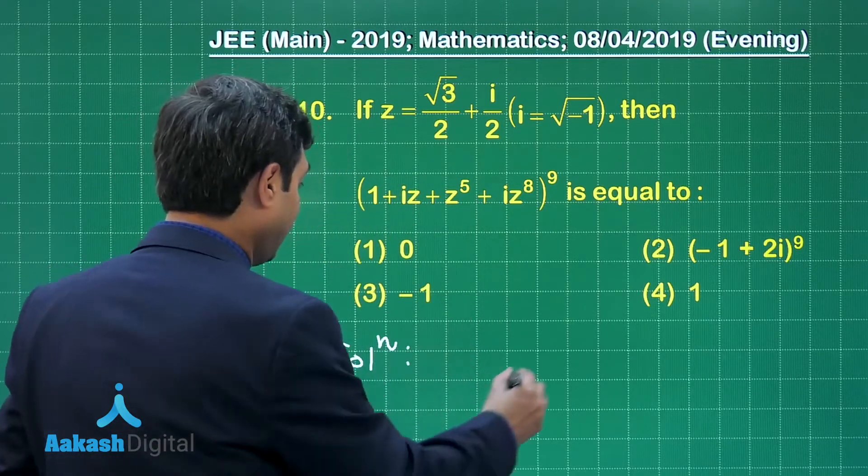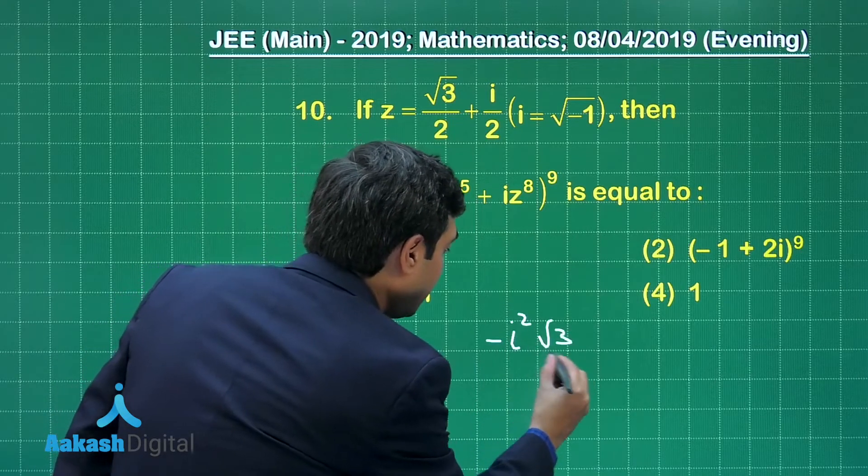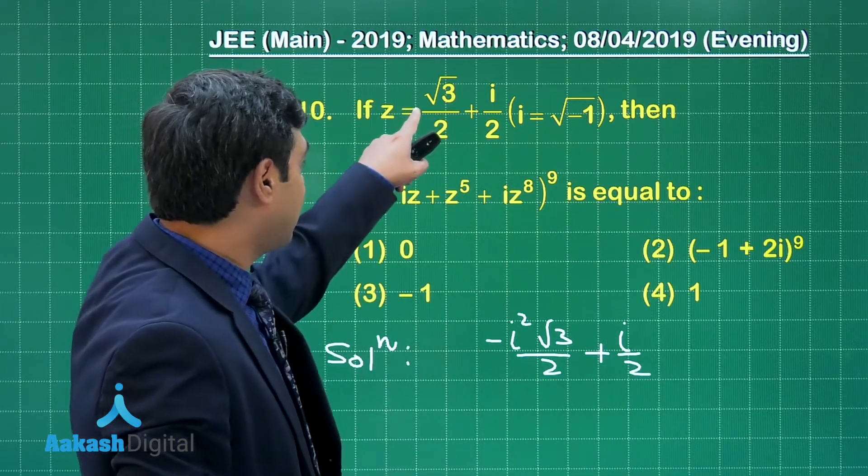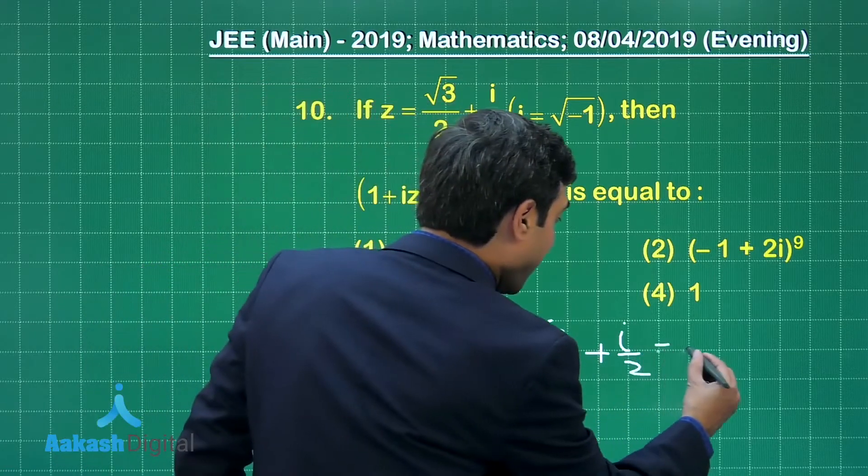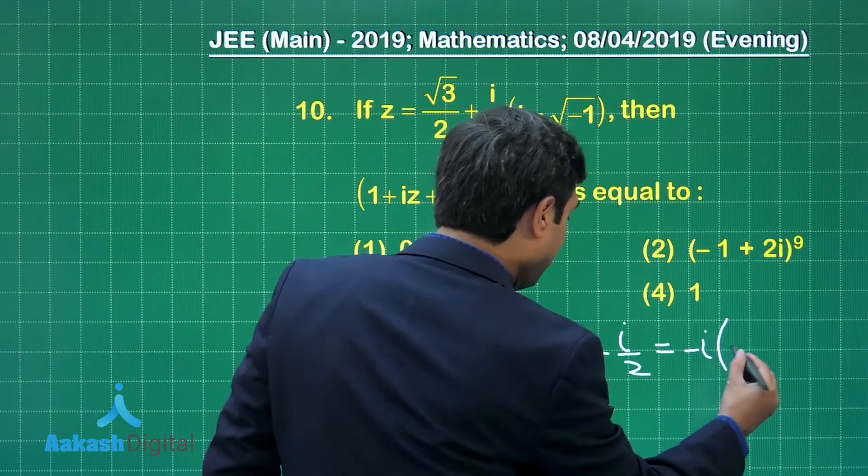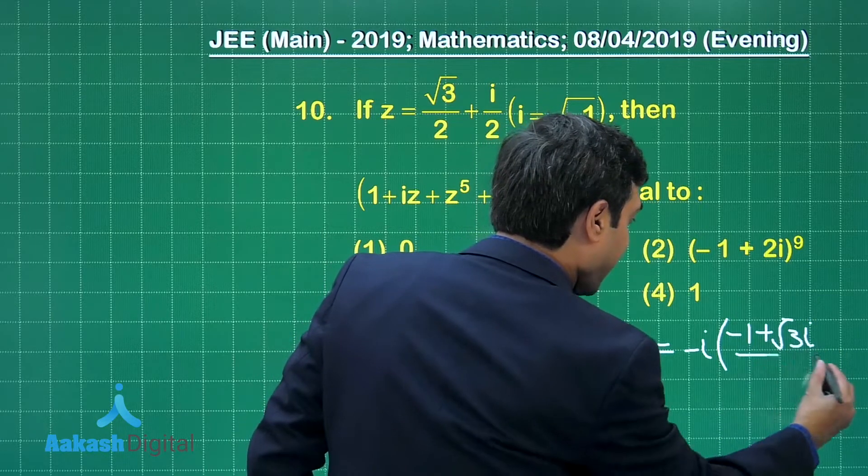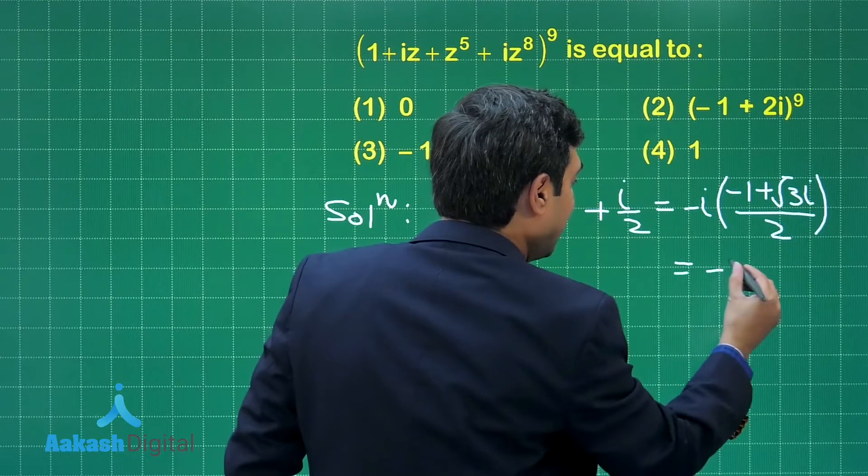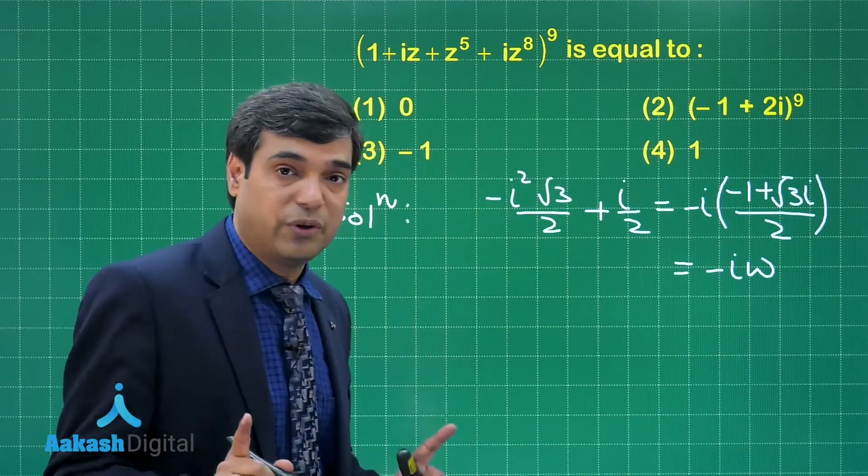Now I am taking this one: -i²(√3/2 + i/2). What I did? I multiplied this term with 1, 1 means -i². Now I can take -i common. I will be left with (-1 + √3i)/2. So let us read this term as omega. So we have -iω.